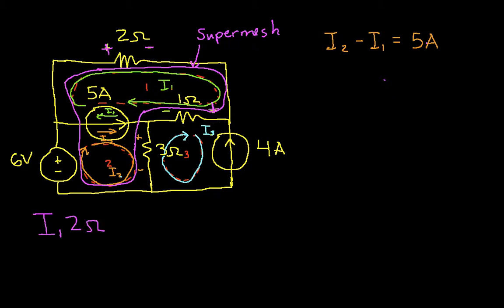And you can see at the 1 ohm resistor, I'll have 1 ohm times I1, that's the current going this way through the resistor, minus I3, that's the current going this way through the resistor. And then I'll get down here to the 3 ohm resistor.